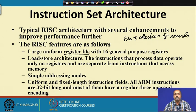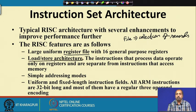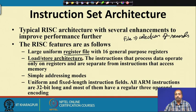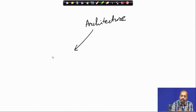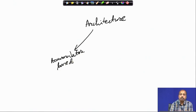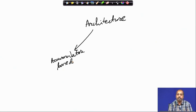It uses a load-store architecture. Load-store architecture means the instructions that process data operate only on registers, separate from instructions that access memory. Architectures like 8085 and 8051 are accumulator-based architectures, where one operand is always the special accumulator register and the destination is also that accumulator — for example, ADD A, B or ADD A, H.